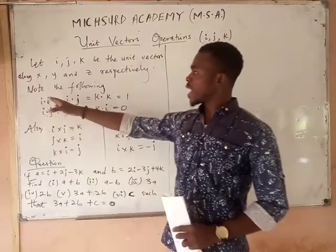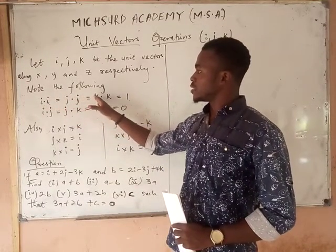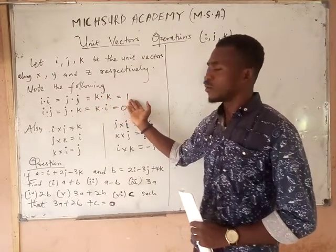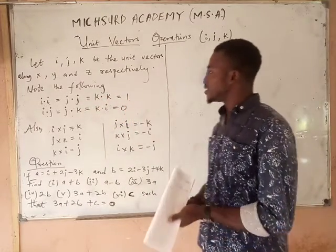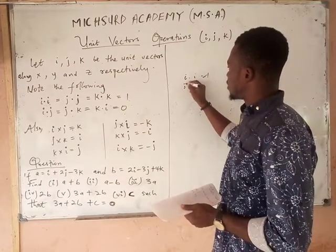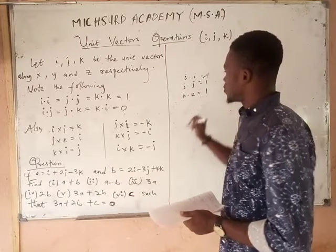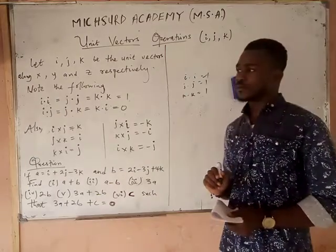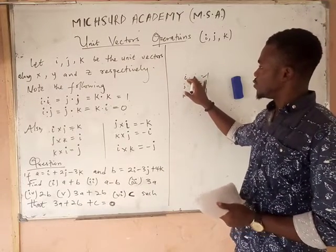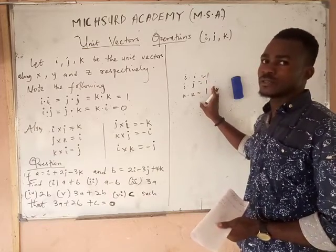For the dot product, we say i dot i will be equal to j dot j, which is equal to k dot k, and finally it is equal to 1. So that means i dot i is equal to 1, j dot j is equal to 1, k dot k is also equal to 1. So when you are dotting two same unit vectors, the result will be equal to 1.